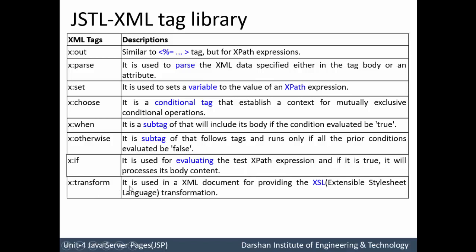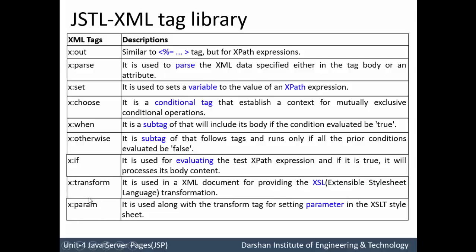x:transform — this tag is used in an XML document for providing XSL, that is Extensible Stylesheet Language, transformation. So this tag is used for the transformation of an XML document. x:param — the name itself suggests that if one needs to pass any parameter to an XML document, x:param is used. It is used along with the transformation tag for setting parameters in XSL stylesheets.